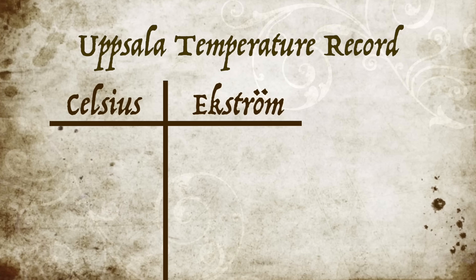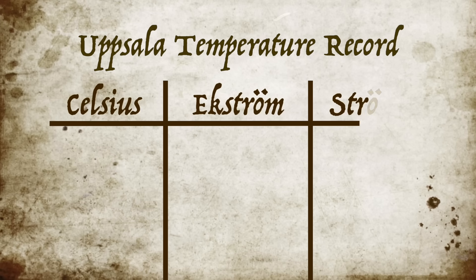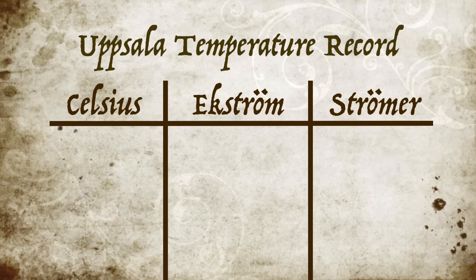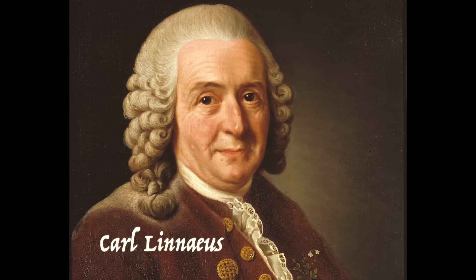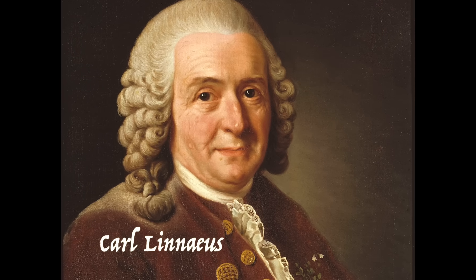Ekstrom was the instrument maker at Uppsala. In 1747, another column is added with the heading Stromer, who was Celsius's successor as professor of astronomy — again with the same modern scale. But it's another professor at Uppsala who claims that he reversed the scale: the famous biologist Carl Linnaeus. He says he reversed the scale when he ordered a thermometer from Ekstrom for his greenhouse. Whoever it was, we know that by 1745 there was an operational thermometer at Uppsala University with the scale we now all know as the Celsius temperature scale — except this was not the first such thermometer ever created.